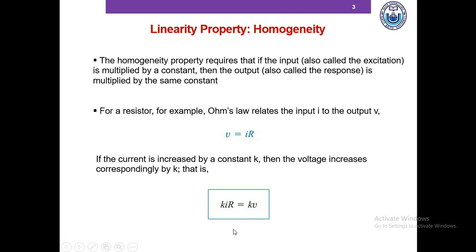For instance, if we double the current and the voltage increases four times or something, then it's not a linear resistor and that resistor does not obey Ohm's law. So homogeneity property basically states that if the input is multiplied by a constant K, the output also becomes K times greater.